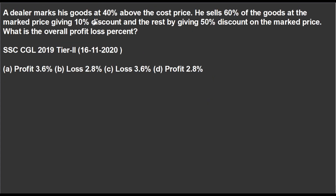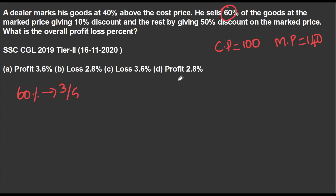Next sum: a dealer marks its goods at 40% above the cost price, so the cost price is 100x. He sells 60% of goods. 60% as a fraction value is 3/5, so the total is 5 goods and 3 goods are sold at 60%.